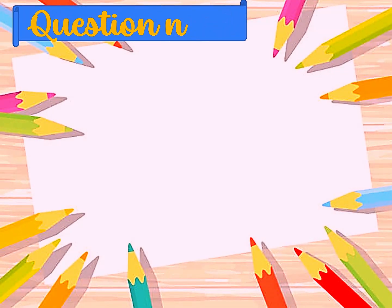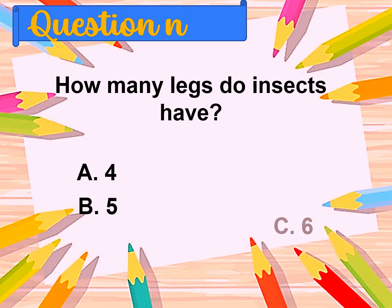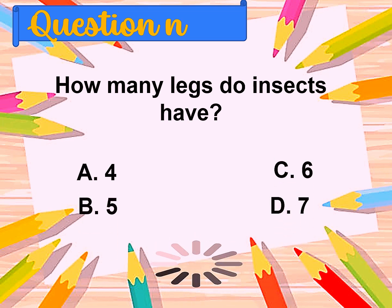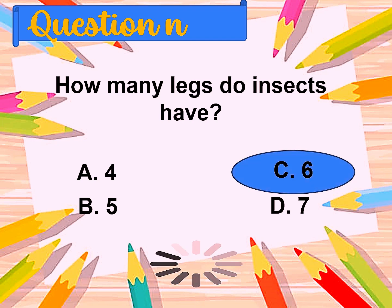Question number seven: How many legs do insects have? A. Four, B. Five, C. Six, D. Seven. The correct answer is six.